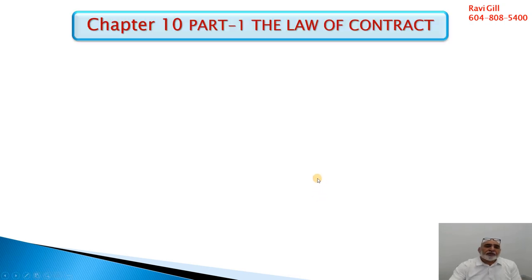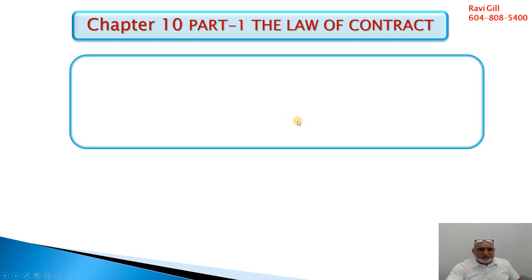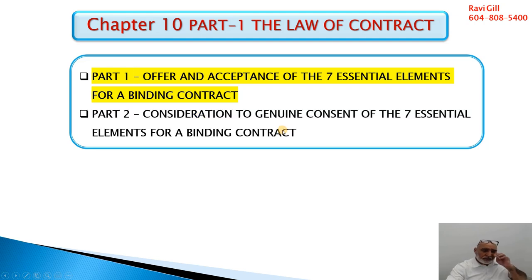Good morning everybody. This is Chapter 10 of the real estate course, called the law of contract. We've separated Chapter 10 into two parts. Chapter 10 is all about contract in general, not necessarily contracts of real estate. Any contract or every contract must have seven essential elements for it to be a binding contract.